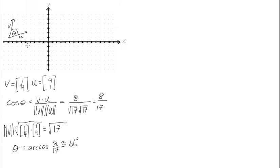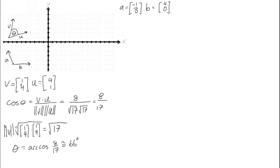Now let's do another example. Say we have some other vectors that look like this — vector a and vector b. We'll apply the same formula: one vector dot the other, divided by the first vector's length times the second vector's length. Let's say a is equal to [-1, 3] and b is equal to [4, 0].